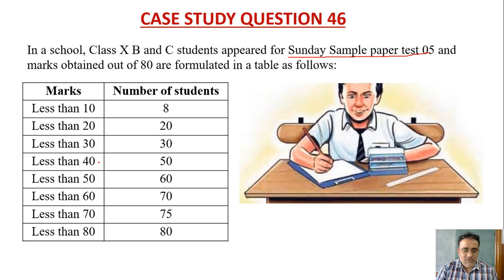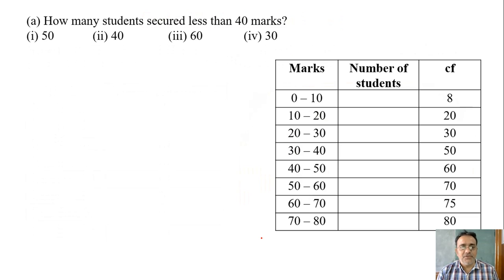So less than 10, less than 20, this is a less than cumulative frequency table. Based on this table, I have framed some questions. Now let us see the questions. The first question: how many students secured less than 40? Already cumulative frequency is there, and this is less than 40, so what is the correct answer?